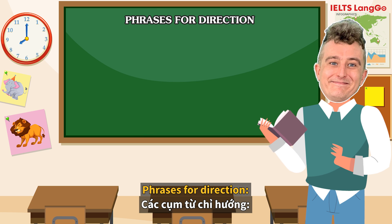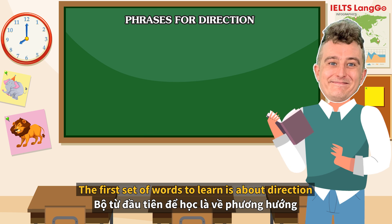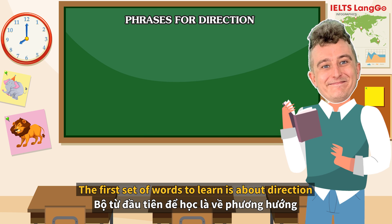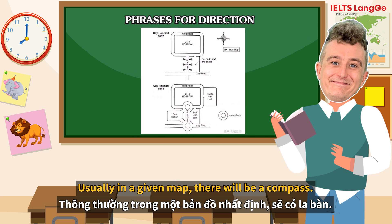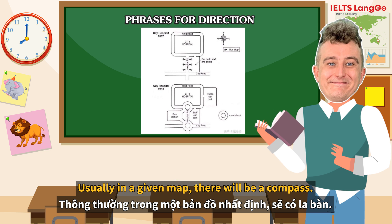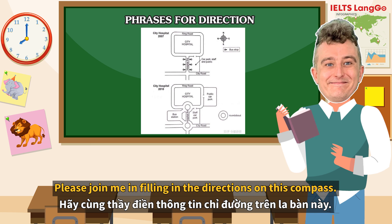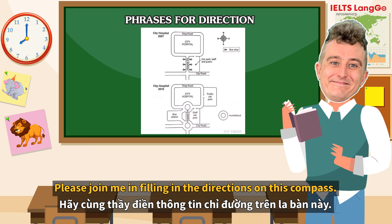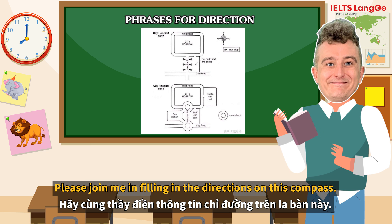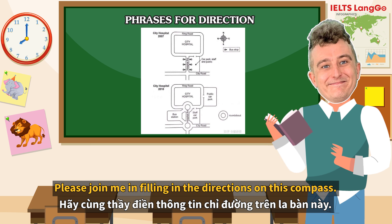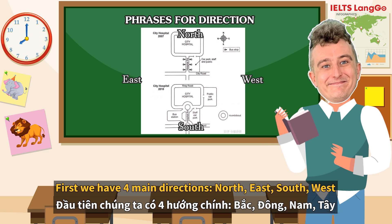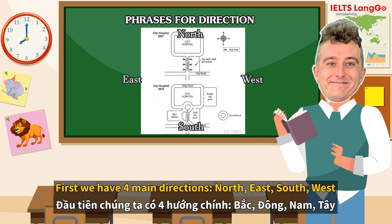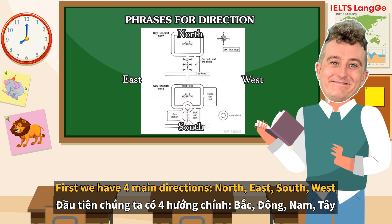Phrases for direction. The first set of words is to learn about direction. Usually, on a given map there will be a compass provided. Please join me in filling in the directions on this compass. First, we have the four main directions: North, East, South, and West.